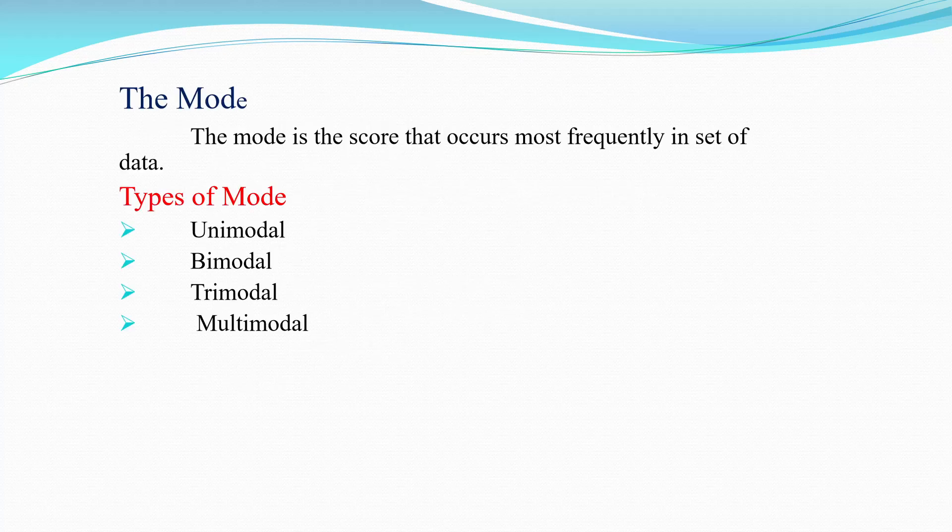The mode is the score that occurs most frequently in a set of data. There are 4 types of mode: first is unimodal, second is bimodal, third is tri-modal, and fourth is multimodal.